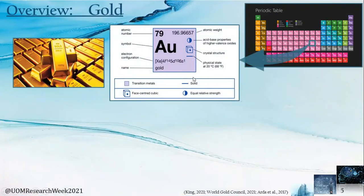Gold is a transition metal element having atomic number of 79. Naturally, gold occurs in its native form with the association of silver and copper. Gold has some unique properties such as highest malleability and ductility among all metals, high thermal and electrical conductivity, and stability and corrosion resistivity. These properties have turned gold into a highly desired metal throughout all of human history.